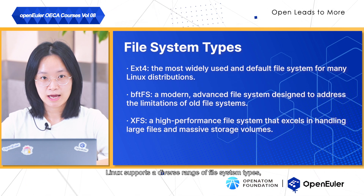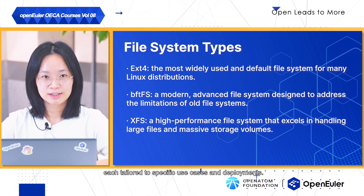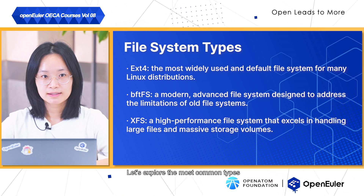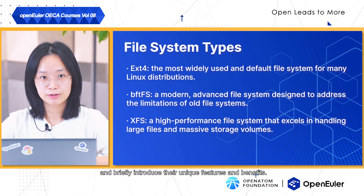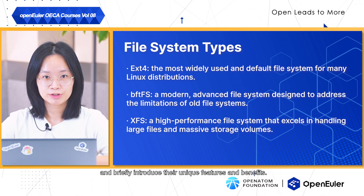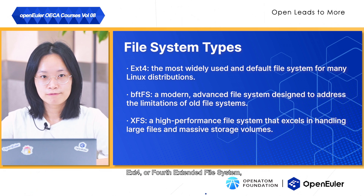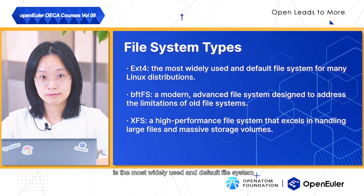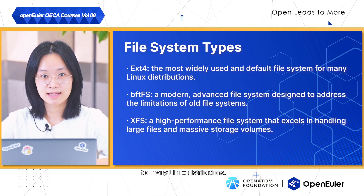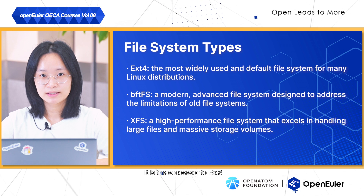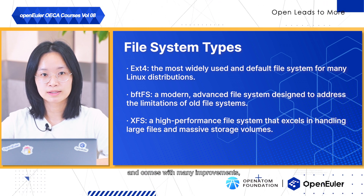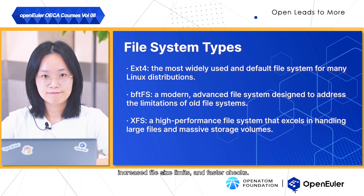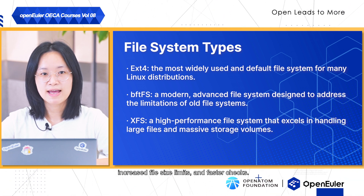Linux supports a diverse range of file system types, each tailored to specific use cases and deployments. Ext4, or Fourth Extended File System, is the most widely used and default file system for many Linux distributions. It is the successor to Ext3 and comes with many improvements, including better performance, increased file size limits, and faster checks.